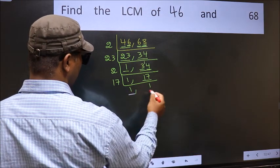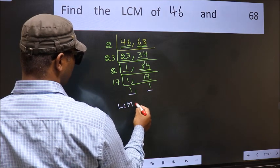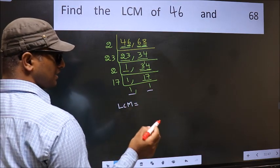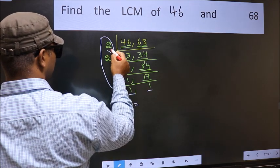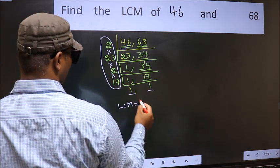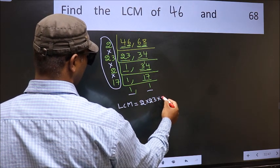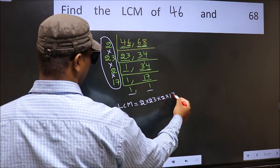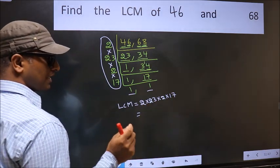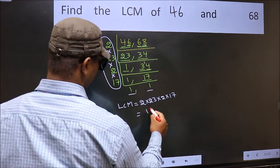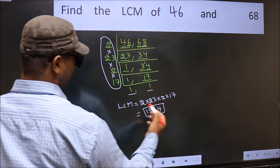So we got 1 in both places. So our LCM is the product of these numbers: 2 into 23 into 2 into 2 into 17. When we multiply these numbers, we get 1564 as our LCM. Thank you.